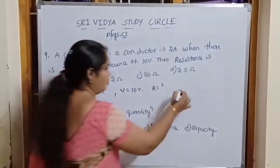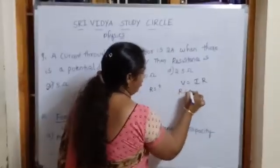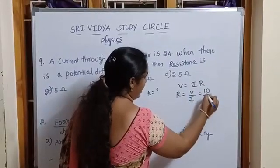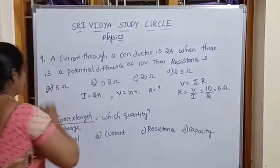According to Ohm's law, V is equal to IR, then R is equal to V by I. V is equal to 10 volts and I is equal to 2 amperes. 10 by 2 gives 5 ohms. Then option A is correct.